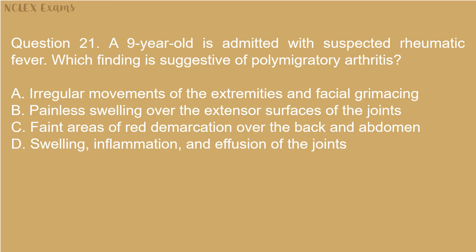Question 21: A 9-year-old is admitted with suspected rheumatic fever. Which finding is suggestive of polymigratory arthritis? A. Irregular movements of the extremities and facial grimacing. B. Painless swelling over the extensor surfaces of the joints. C. Faint areas of red demarcation over the back and abdomen. D. Swelling, inflammation, and effusion of the joints.